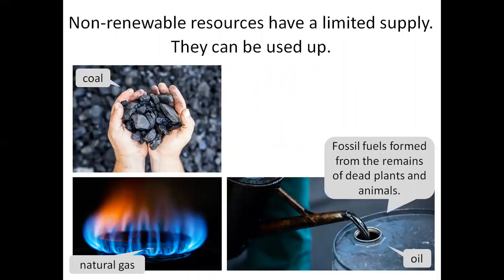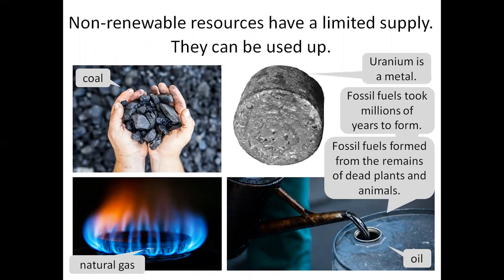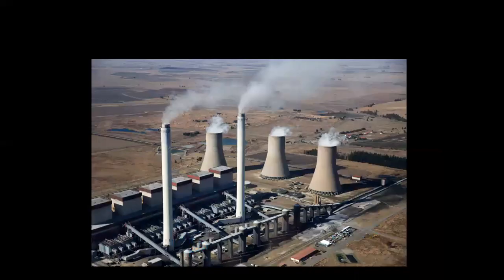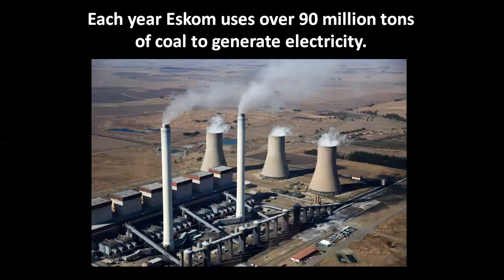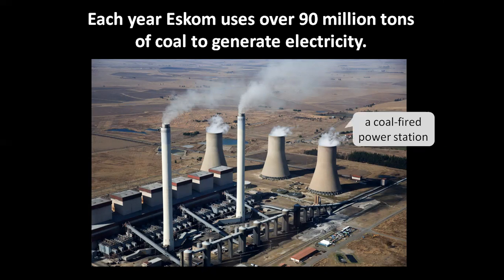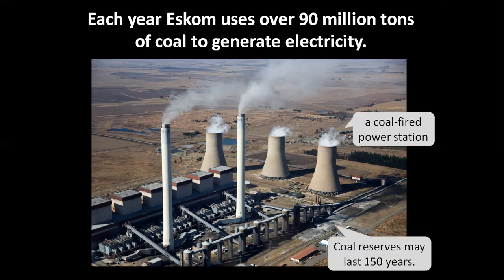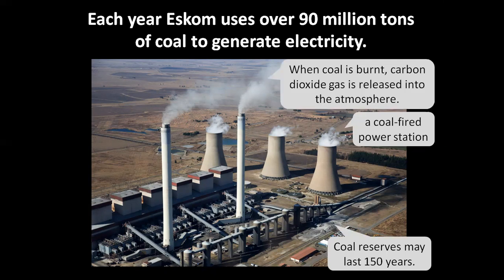Fossil fuels form from the remains of dead plants and animals. Fossil fuels took millions of years to form. Uranium is a metal. Each year Eskom uses over 90 million tons of coal to generate electricity. A coal-fired power station. Coal reserves may last 150 years. When coal is burned, carbon dioxide gas is released into the atmosphere.